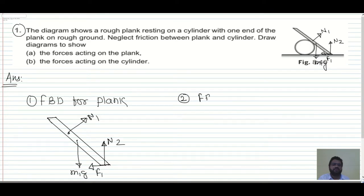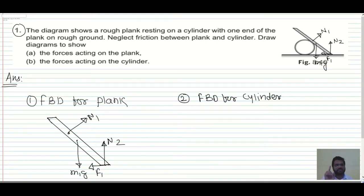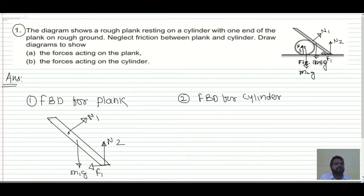Second one: free body diagram for the cylinder. Now on the cylinder — what is a free body diagram? It is just the pictorial representation of the forces which are acting on that body only. On the cylinder, mass of the cylinder is there, so M2G will be the weight. Then there is a touching between the two surfaces, so a normal reaction will be there in the upward direction — N3. And by Newton's third law, every action has equal and opposite reaction, so that is N1.